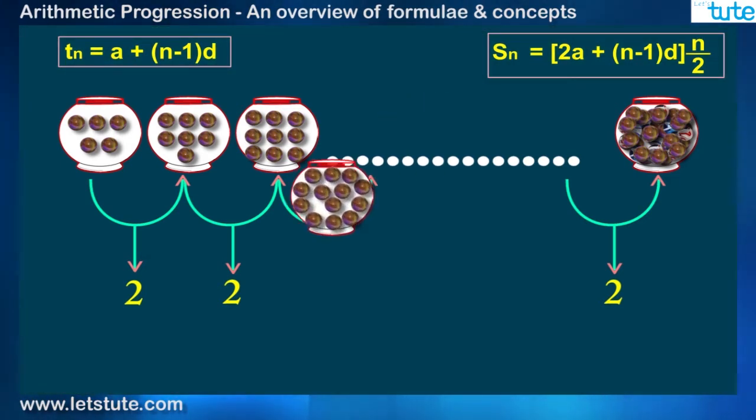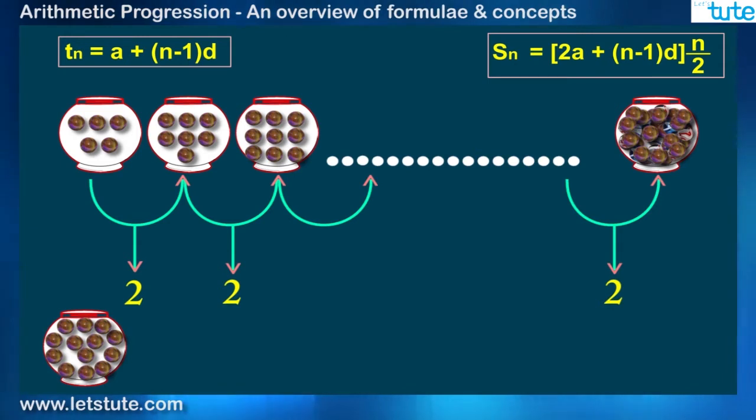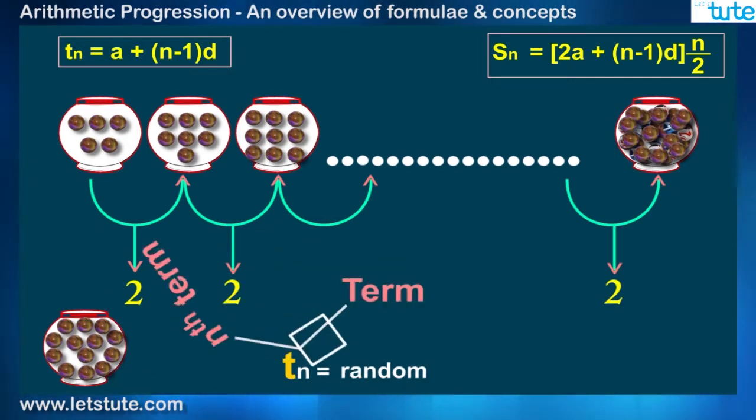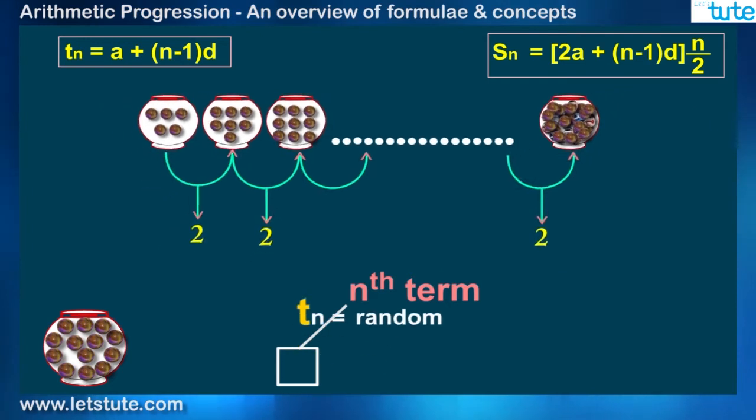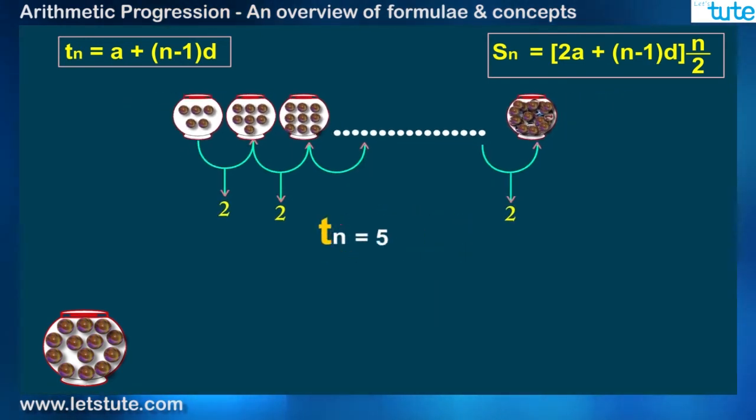Let me randomly select a pot. The number of marbles in the pot is represented by Tn, where n is random. T means term and Tn represents nth term. And I am saying it random because we selected it randomly. But if I say it was the 5th pot, then one would easily say that it is T5 which is 13.